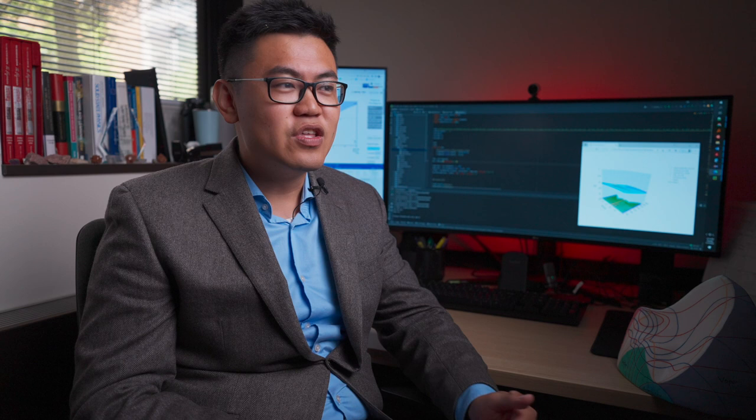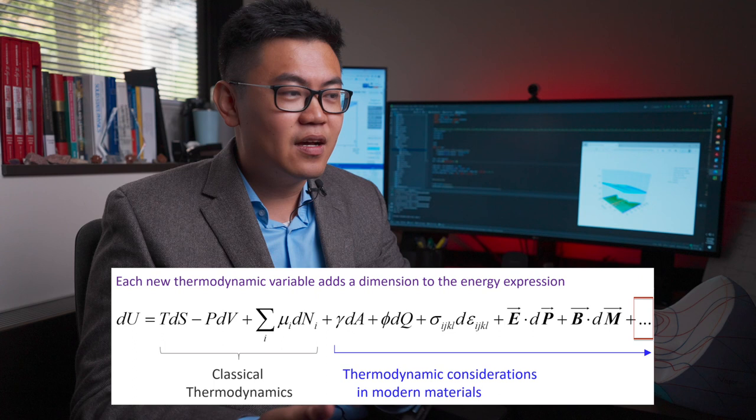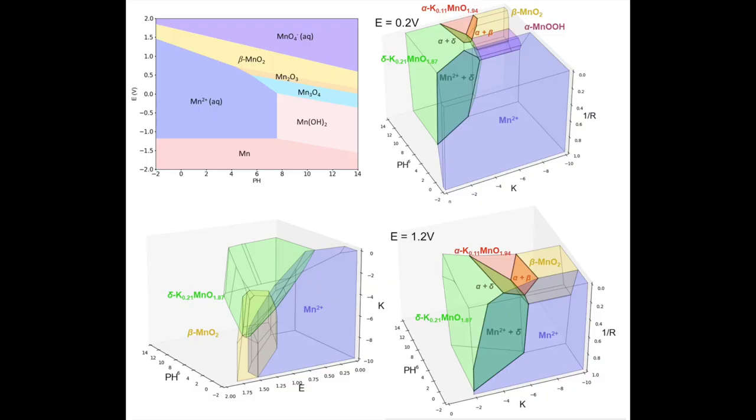As we watch observations of materials forming, one thing we're recognizing is that as materials nucleate and grow at the nanoscale, there are other forms of work that are operative during their formation that we haven't taken into account — things like surface energy, electrostatics, strain energy, electromagnetics, and electrochemical work. If you input these into the free energy expression of materials, it grows that free energy expression into very high-dimensional spaces.